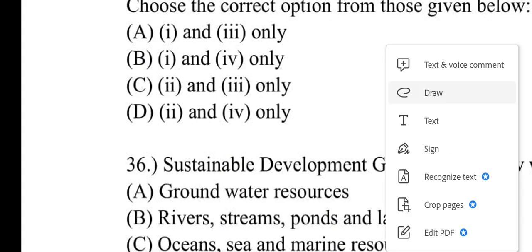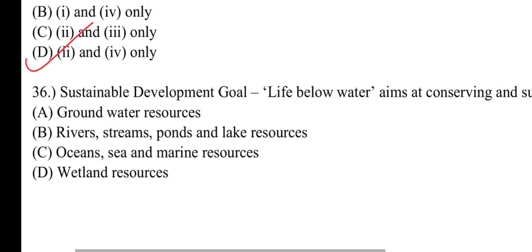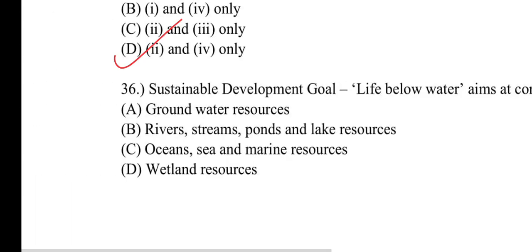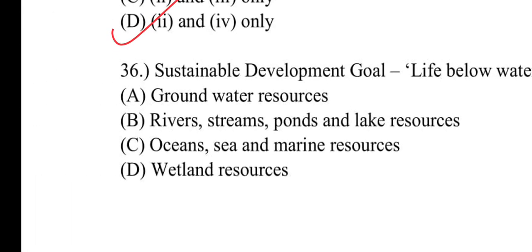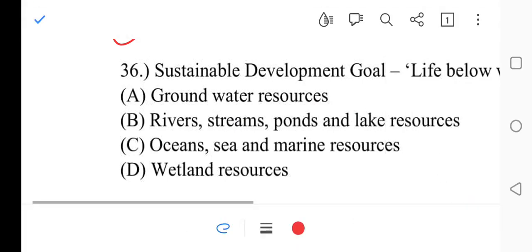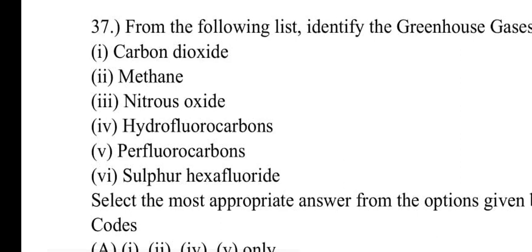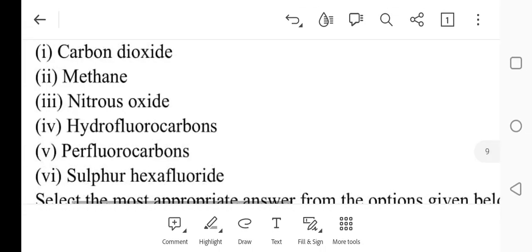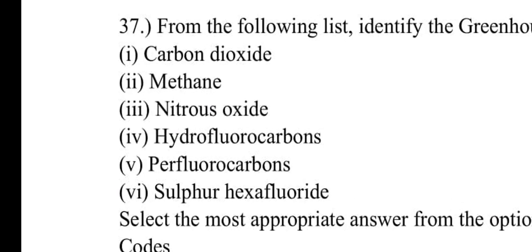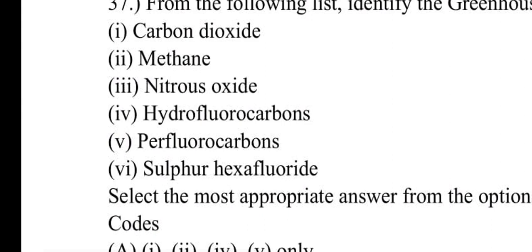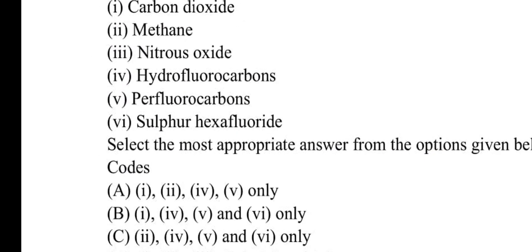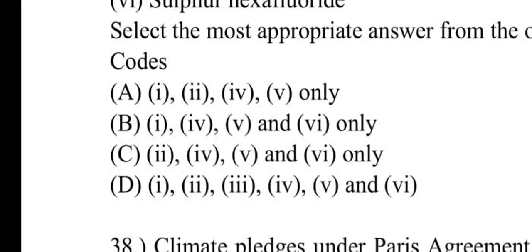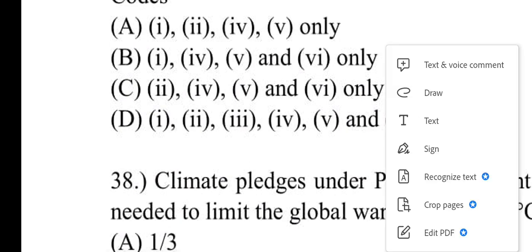Number thirty-six: Sustainable Development Goal SDG 'Life Below Water' aims at conserving and sustainably using what? Number C: ocean, sea, and marine resources will be correct. Number thirty-seven: From the following list, identify the greenhouse gases adopted in the Kyoto Protocol - carbon dioxide, methane, nitrous oxide, hydrofluorocarbons, perfluorocarbons, sulfur hexafluoride. Number D: 1, 2, 3, 4, 5, 6 will be correct - all of them.